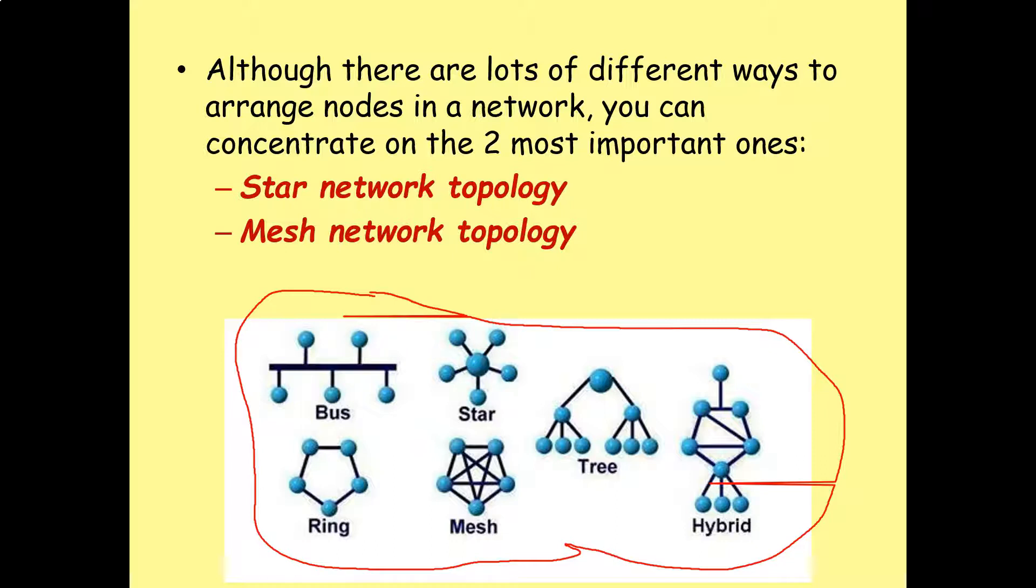Before we look at star and mesh network topologies, I'm going to look at a couple of the older topologies we don't really use anymore. And the reason for this is pretty simple. When we look at star and mesh topologies, I'm going to explain their good points, their advantages. And you have to understand what are these good points in comparison to? Well, these are in comparison to older topologies, like a bus or a ring network.